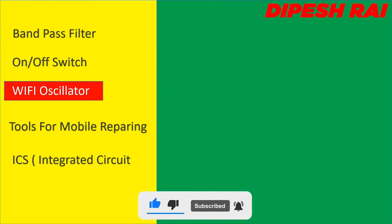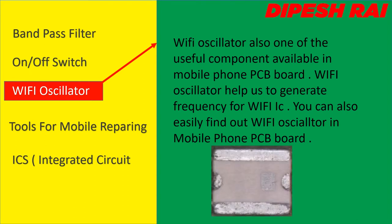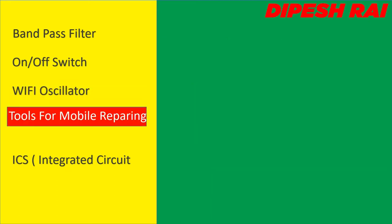Now we are discussing the Wi-Fi oscillator. The Wi-Fi oscillator is one of the useful components available in a mobile phone PCB board. The Wi-Fi oscillator helps us to generate frequency for the Wi-Fi IC. You can also easily find the Wi-Fi oscillator in a mobile phone PCB board. Here is the image of the Wi-Fi oscillator — if you have any problem finding it, let me know in the comment section.